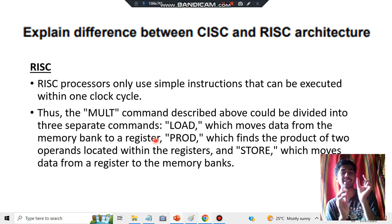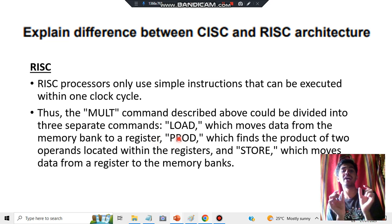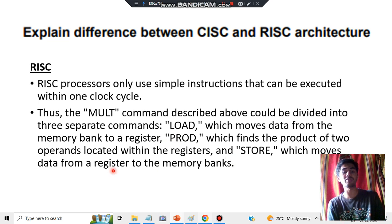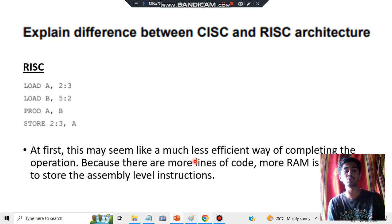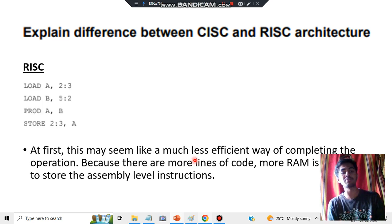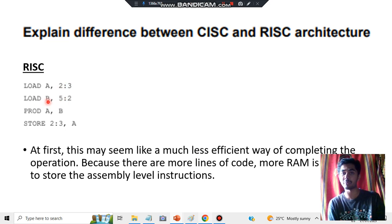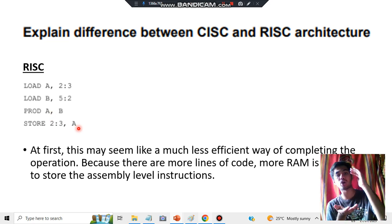If you want to multiply two numbers, say two and three — first you load those two numbers, then you multiply them (the product step), and then you store the answer somewhere (the storing step). The answer is stored from the register to the memory bank, so the concept of a register is involved. You load the first value, load the second value, multiply them, then store the result.